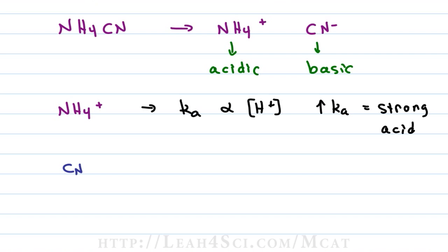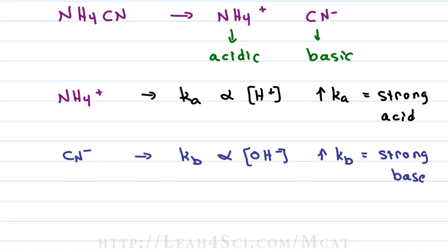cyanide CN- is a base, that means we'd have to look at the Kb remembering that Kb is proportional to OH- concentration telling me that the higher the Kb, the stronger the base. If you're given these two values, simply compare Ka to Kb.